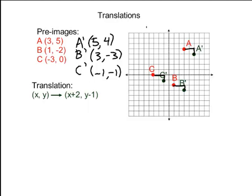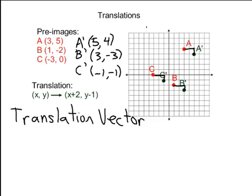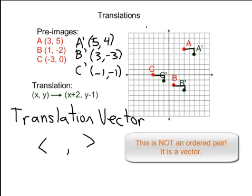Another way that you'll sometimes be given this translation is, instead of in a function like this, you'll be given what's called a translation vector. A translation vector is a more concise way of giving this translation. First of all, you need to know what a vector looks like. The command is really just like an ordered pair, but instead of using parentheses, they use these pointy brackets.